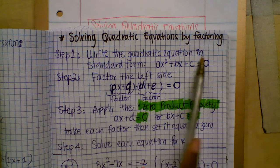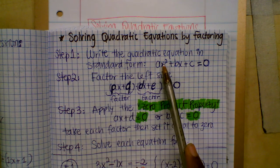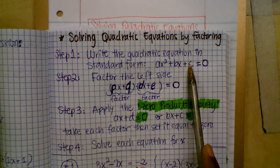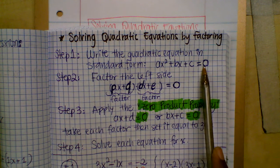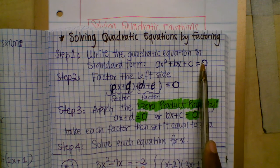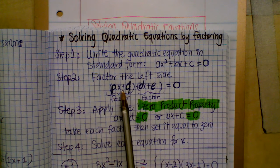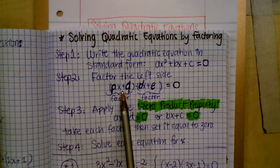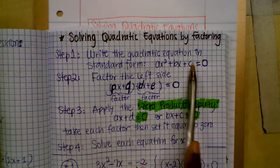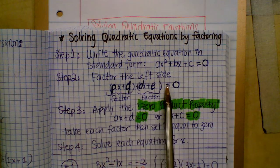Step one: write the quadratic equation in standard form. You want to start with the term with the square first, then the term with x, and then the constant — the number by itself — equal to zero. Basically, the right side is equal to zero.